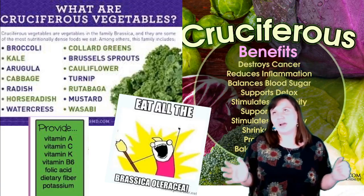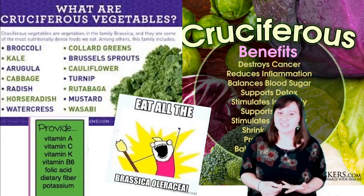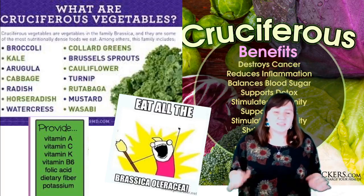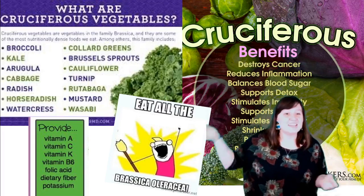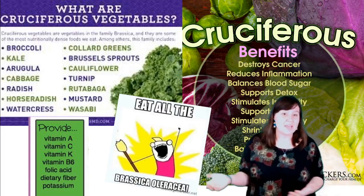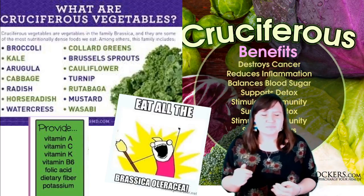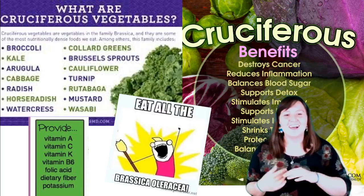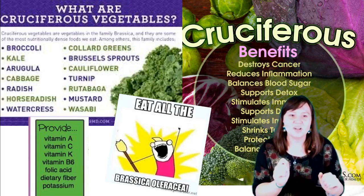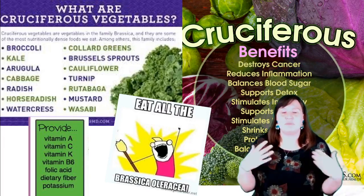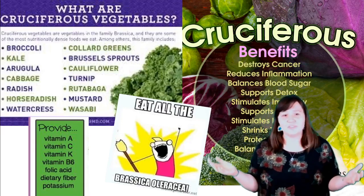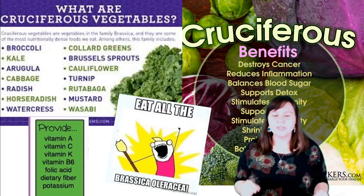There might be some of you who really don't like veggies like broccoli, kale, or Brussels sprouts, but these are really good for you, so I would recommend trying them in different ways. I love Brussels sprouts — one of my favorite ways to make them is by cutting them in half and roasting them in the oven with a little bit of salt. It is so good, and my mouth is kind of watering just standing here talking about it. Any of these veggies are going to be really great for your health.